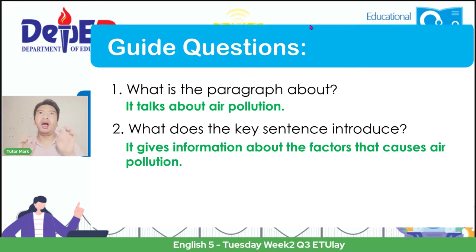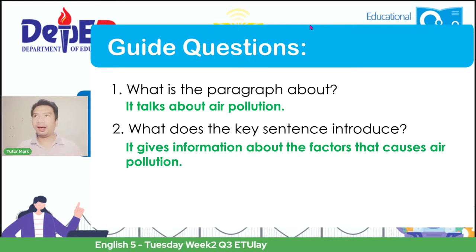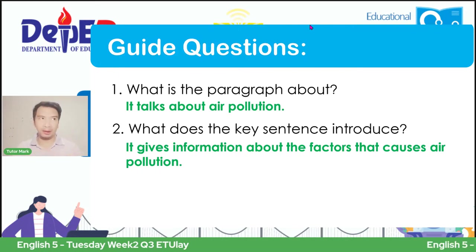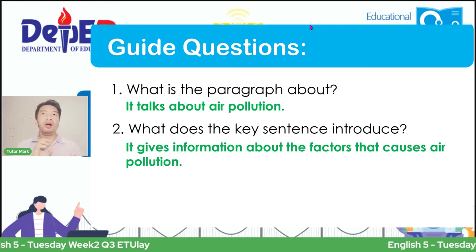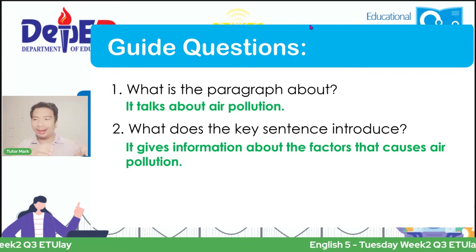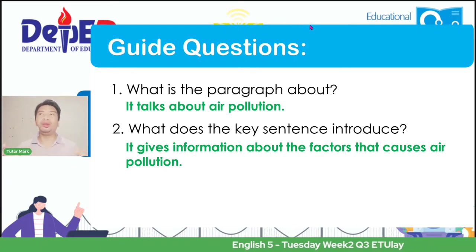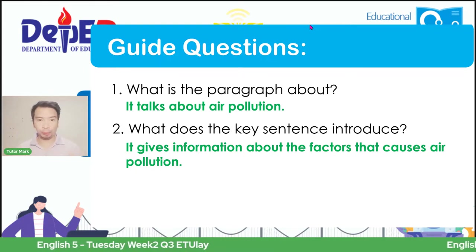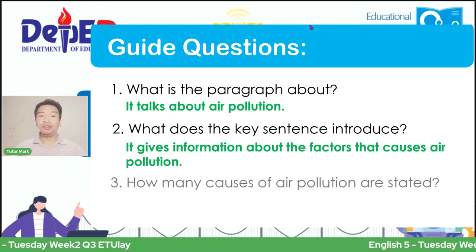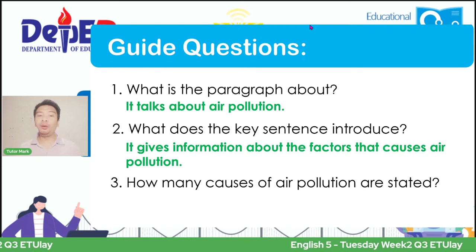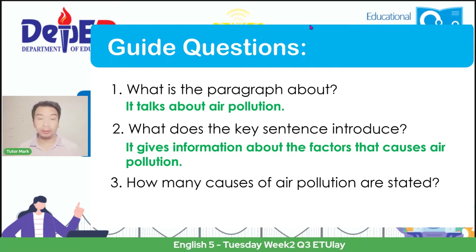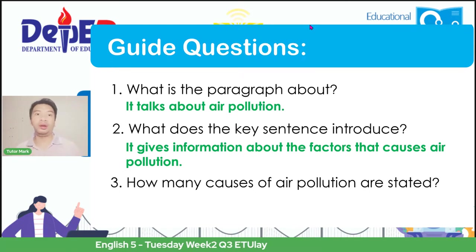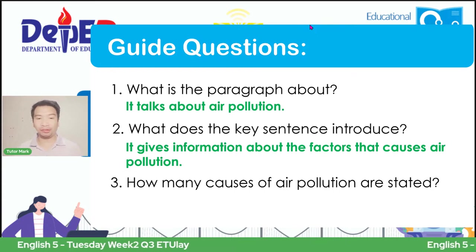Since we already identified that this is about air pollution, that is its topic sentence or key idea. Since you already know the key topic—which is all about air pollution—your summary should revolve around that. Next: what does the key sentence introduce? What was shared or said here? It elaborated the different reasons why we have air pollution.